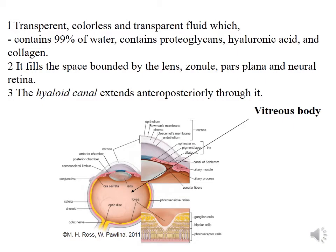The vitreous body occupies the region of the eye behind the lens. It is a transparent gel consisting of water (approximately 99%), collagen, and hyaluronic acid. The vitreous body supports the lens and retina.